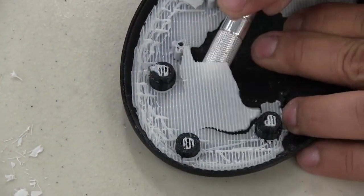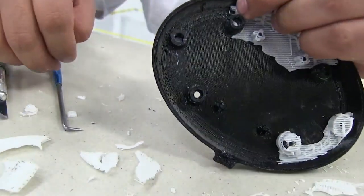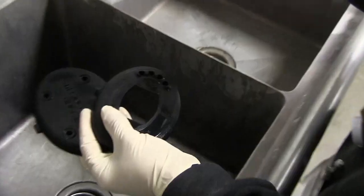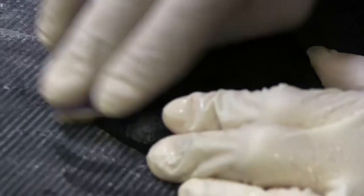Raw FDM parts have visible layer lines. However, service providers offer multiple finishing options to create smooth, even surface parts including hand sanding, assembly, and cosmetic paint.